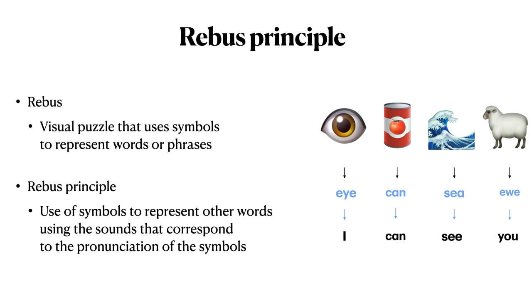So, we've now examined the Rebus principle in action. Let's recap. A Rebus is a visual puzzle that uses symbols to represent words or phrases. The Rebus principle is the use of symbols to represent other words using the sounds that correspond to the pronunciation of the symbols. We looked at an example — 'I can see you' — using pictures of an eye, a can, a wave, and a sheep. We also looked at the example of Frederick the Great and Voltaire, and we recognize that the Rebus principle is language specific.